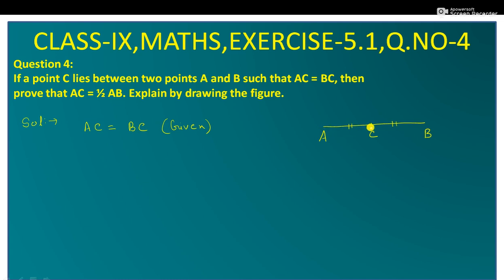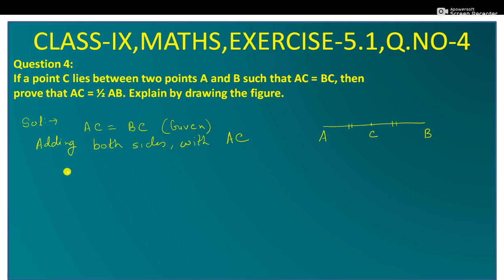AC का BC के साथ बराबर है. अगर हम कुछ add करते हैं दोनों तरफ तो वो same होता है. तो हम यहाँ पर AC add करेंगे — adding both sides with AC. दोनों तरफ AC add करेंगे तो हो जाएगा AC plus AC is equal to BC plus AC.